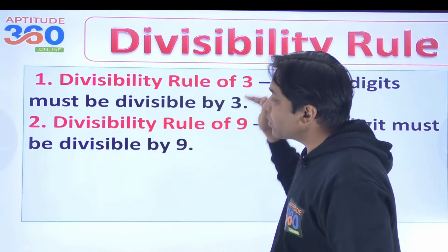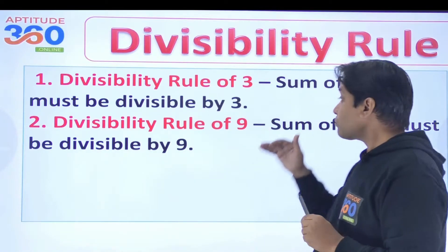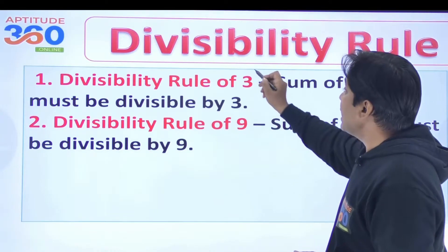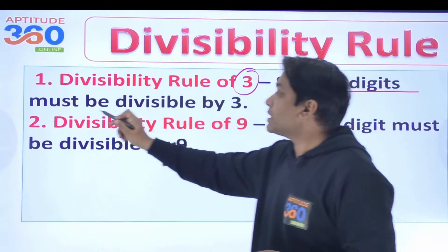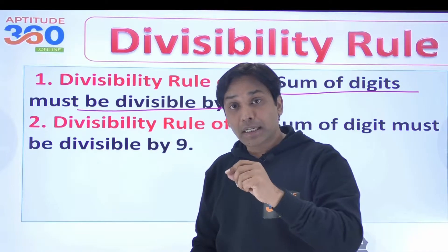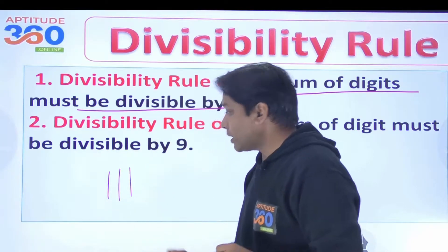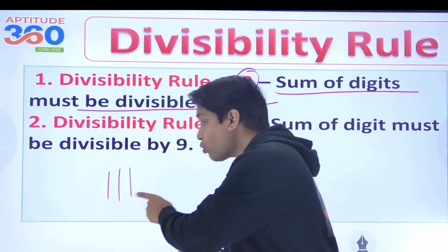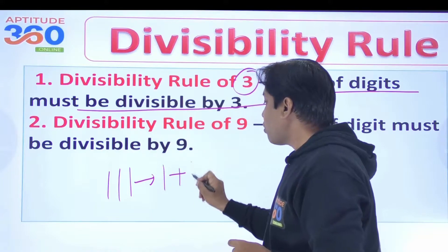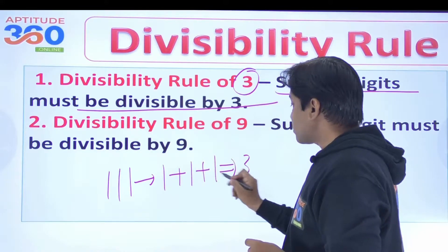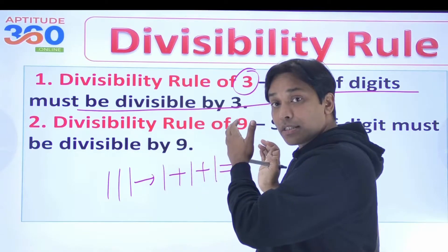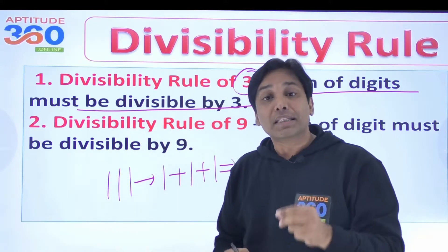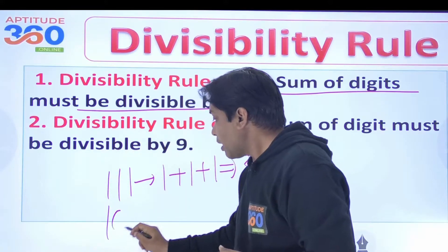Now divisibility rules of 3 and 9 are very similar in nature. The divisibility rule of 3 says the sum of digits must be divisible by 3. For example, is 111 a multiple of 3? Yes, because 1+1+1 = 3, and 3 is divisible by 3. What about 10101? The sum is 1+0+1+0+1 = 3, and hence 10101 is also a multiple of 3.